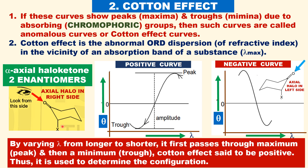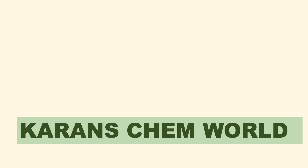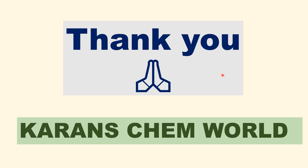For example, alpha-axial halo ketones exhibit Cotton Effect curves. One isomer, where the carbonyl group and the axial halo group are on the right-hand side, shows a positive Cotton Effect curve. Another isomer, where the axial halo group is on the left side, shows a negative Cotton Effect curve. This is useful for determination of configurations and conformations of organic as well as inorganic compounds. Thank you for watching — please share and subscribe.